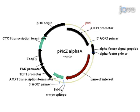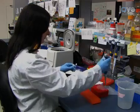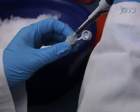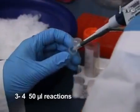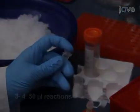Prior to transformation, linearize the vector containing your gene of interest by restriction digest. We use the enzyme PmeI, but other restriction sites are possible as long as your insert does not contain that restriction site. To obtain sufficient linearized vector DNA, set up three to four 50 µL restriction digest reactions in separate tubes. After the digest,